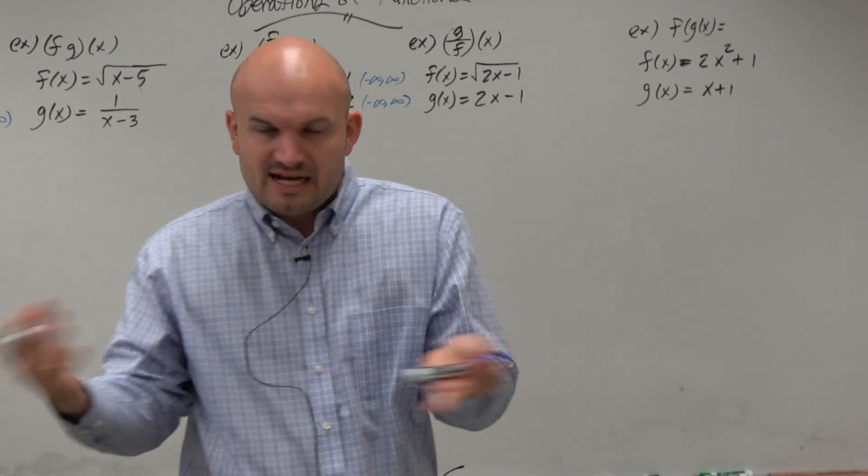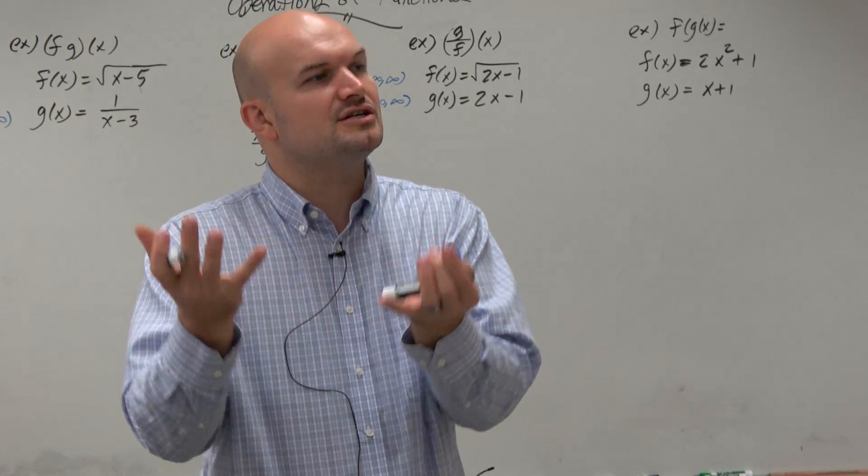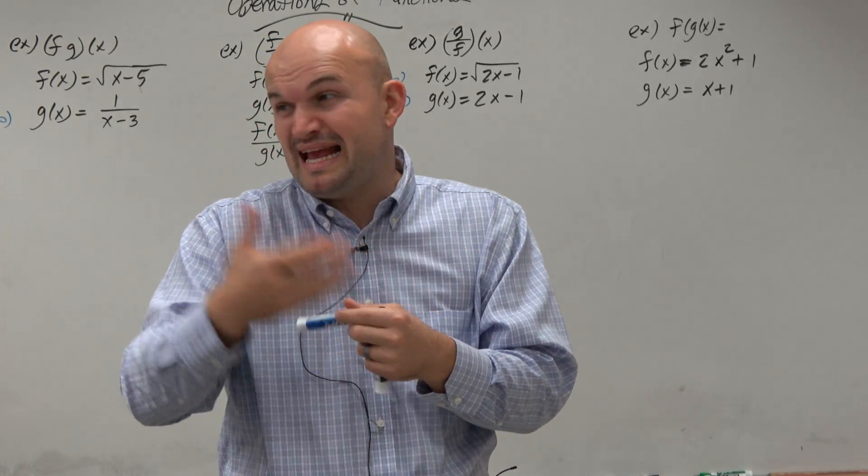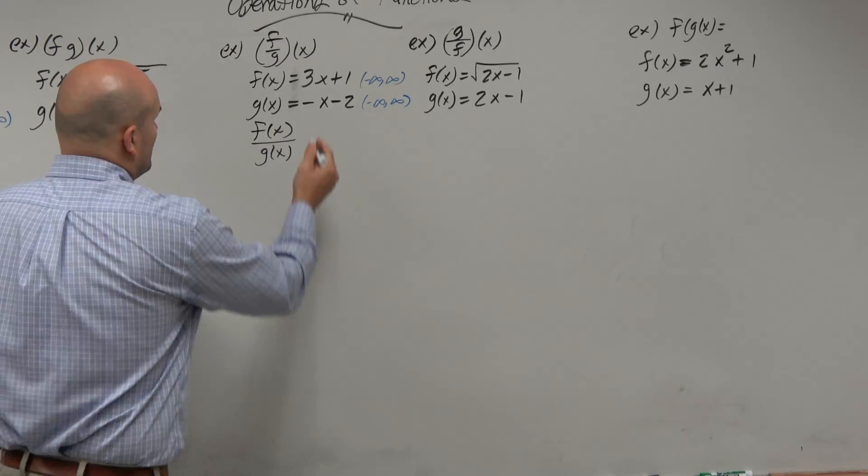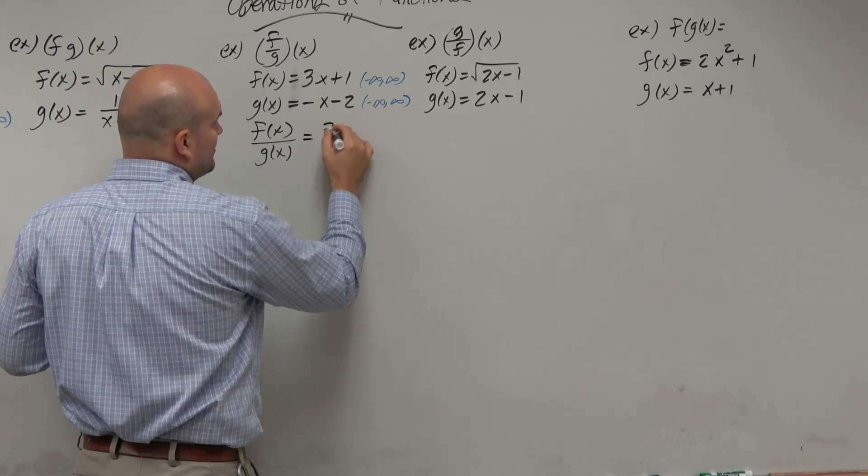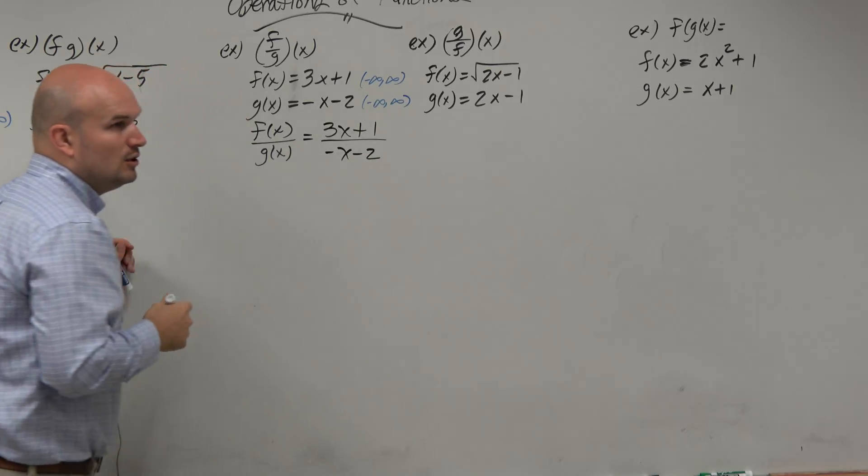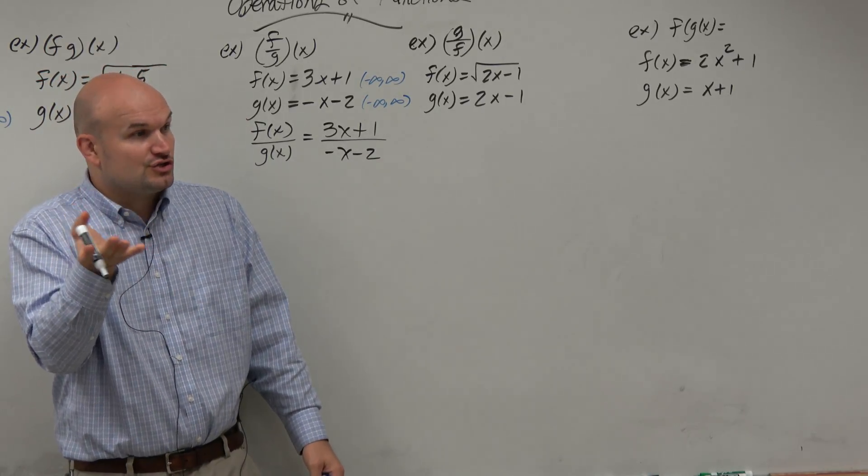it's all real numbers, because that's what f of x and g of x are. So the intersection of those two functions is going to be all real numbers. The problem is, with division, we've created a new constraint. When we do this division, we take 3x plus 1, and we put it over negative x minus 2. We have now just created a new constraint